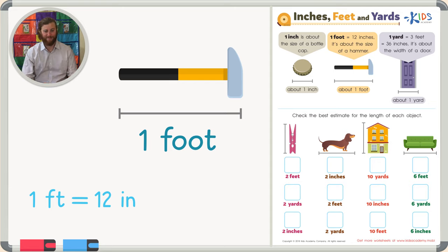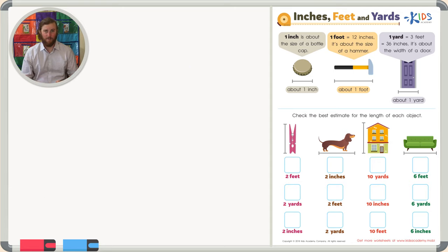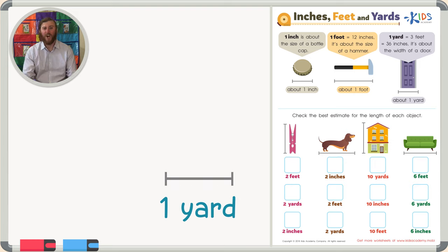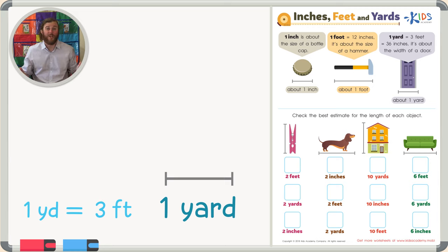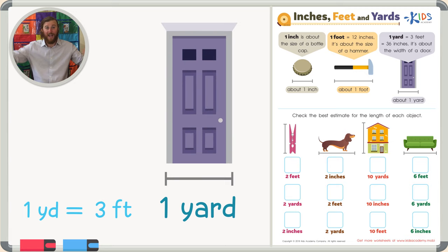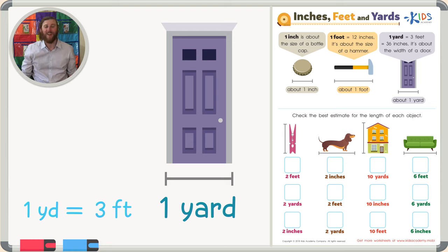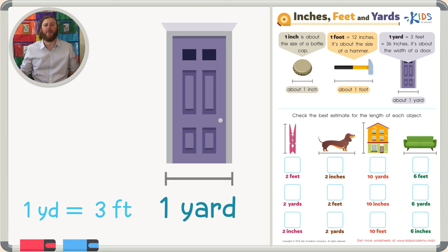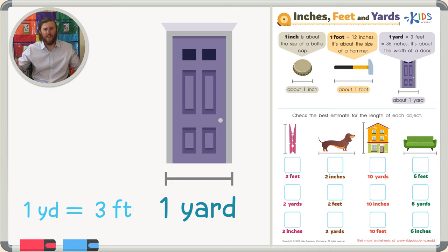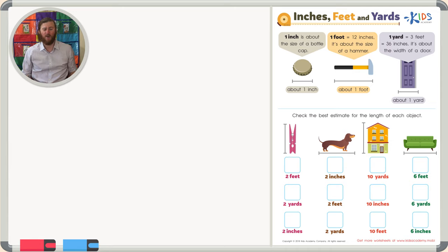The last measurement I'd like to go over is one yard. A yard is three feet long. A good estimate for a yard is about the width of a door — not the height, because the height of a door is more than six feet. The width of a door, meaning how wide it is, is about three feet or one yard. So when you want to estimate one yard, think about the width of a door.